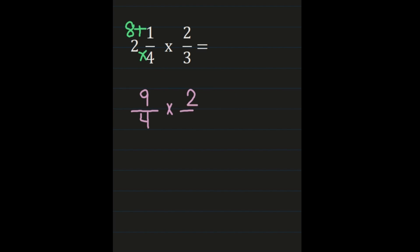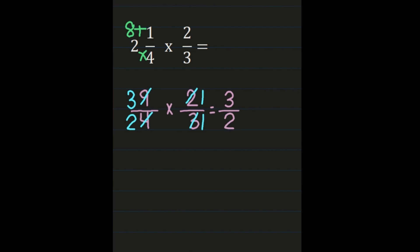Before multiplying, I notice that 4 and 2 share a common factor of 2: 2 divided by 2 is 1, and 4 divided by 2 is 2. Also, 9 and 3 share a common factor of 3: 3 divided by 3 is 1, and 9 divided by 3 is 3. Now multiplying: numerator times numerator is 3 times 1 equals 3, and denominator times denominator is 2 times 1 equals 2, for a product of 3 halves.